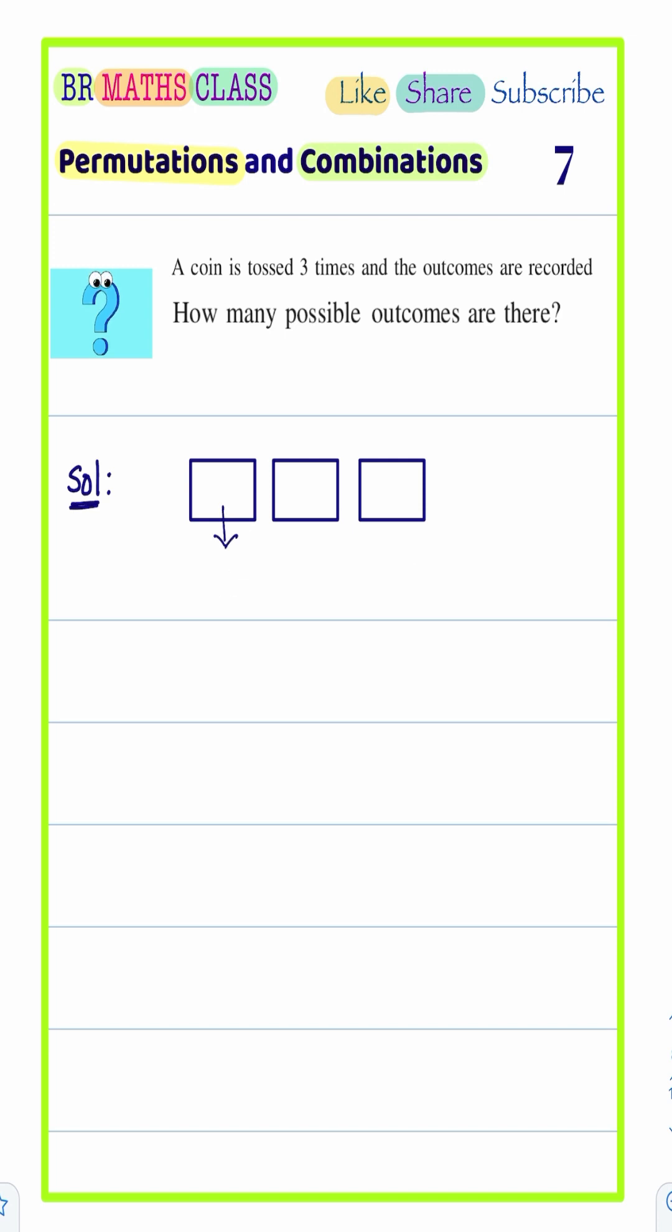So, this first box, that means when a coin is tossed first time, it gives two results. Similarly, when a coin is tossed second time, then it gives two results, head or tail.